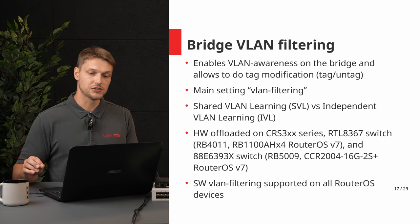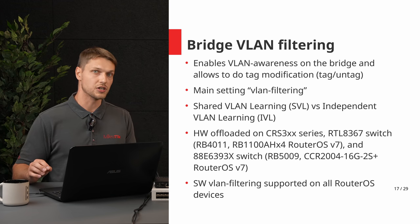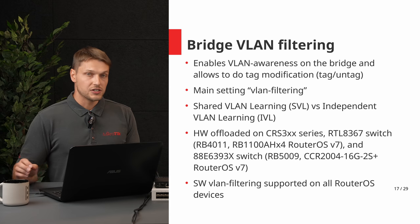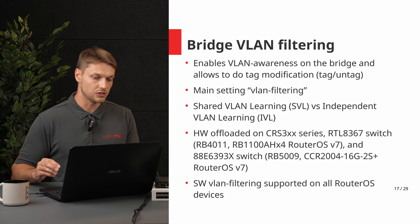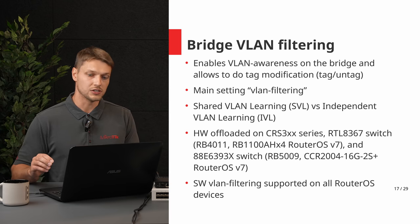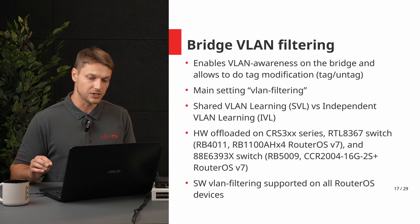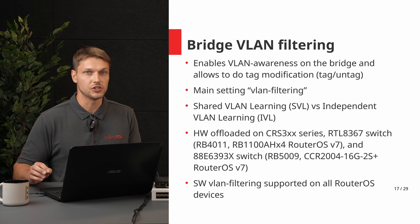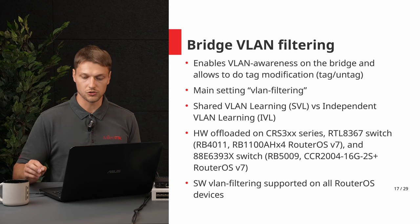What does bridge VLAN filtering do? With bridge VLAN filtering, you provide VLAN awareness to your bridge and can modify VLAN tags — for example, remove or add a VLAN tag. The main setting is VLAN filtering. If disabled, the bridge ignores all VLAN tags and works in shared VLAN learning mode and cannot modify VLAN tags. Turning on VLAN filtering enables all VLAN-related functionality and independent VLAN learning mode. Currently only CRS 300 series and some new switches support this in hardware. Software VLAN filtering is supported on all RouterOS devices.